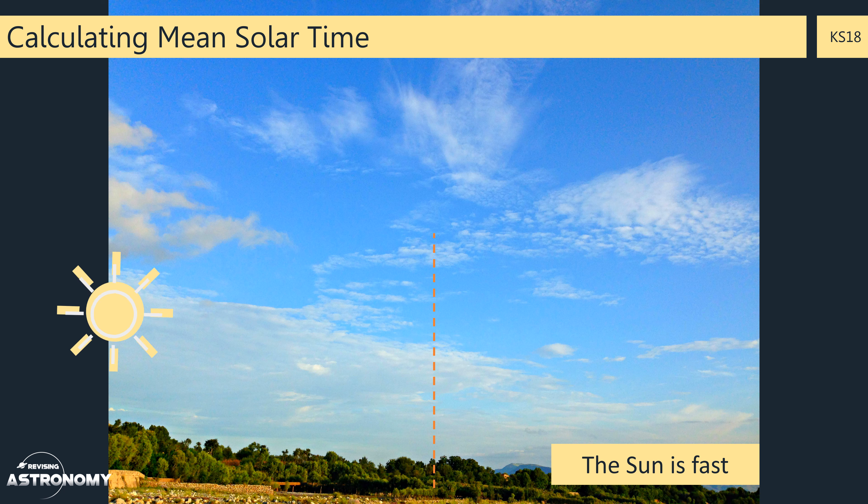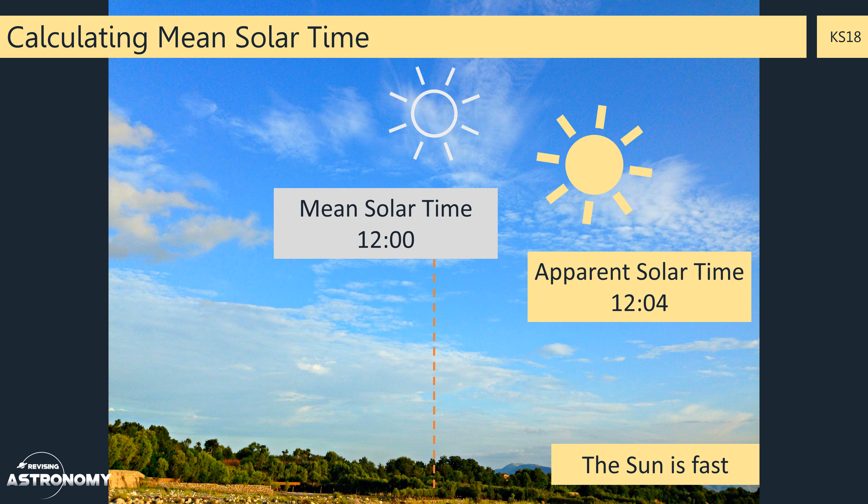In this next example, the apparent Sun is fast. The actual Sun has already reached the highest point and is on its journey back down to setting in the west. The mean solar time is 12, as this is when the mean Sun would have reached the highest point. But in reality, a sundial will tell that it's 12:04, as the Sun has already passed the highest point. This is our apparent solar time.